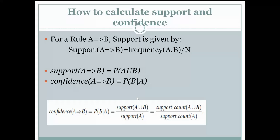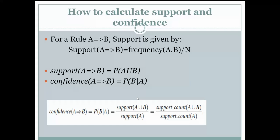There is a formula for support and confidence. Support of A tends to B equals frequency of (A, B) divided by N, or in probability terms: support(A → B) = P(A ∪ B). Confidence of A tends to B equals P(B|A), which is represented as support count of (A ∪ B) divided by support count of A.